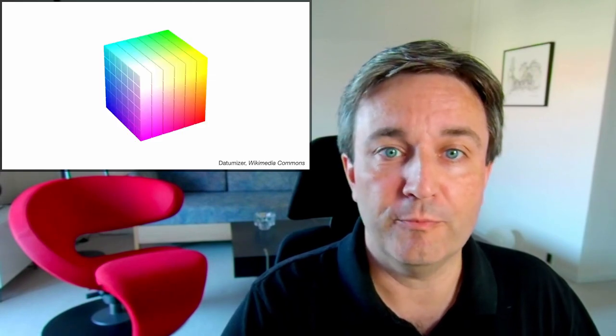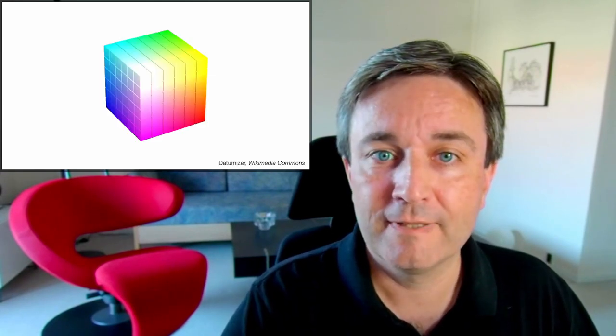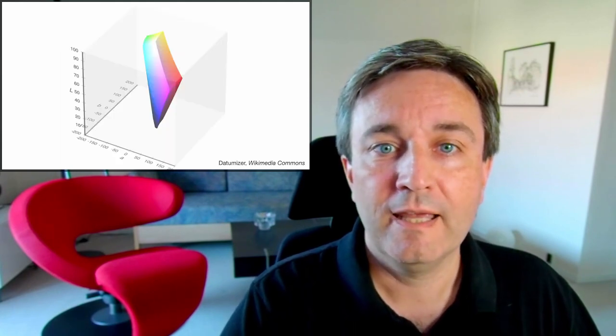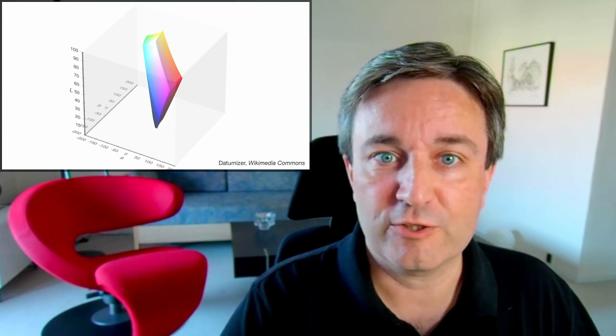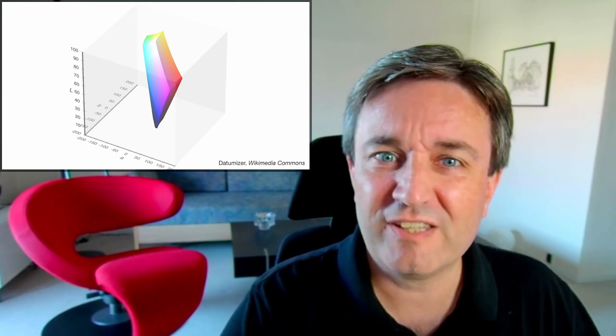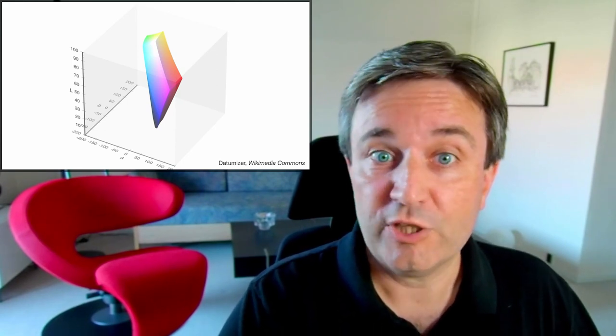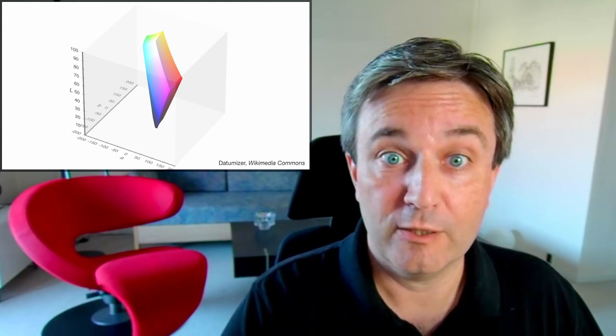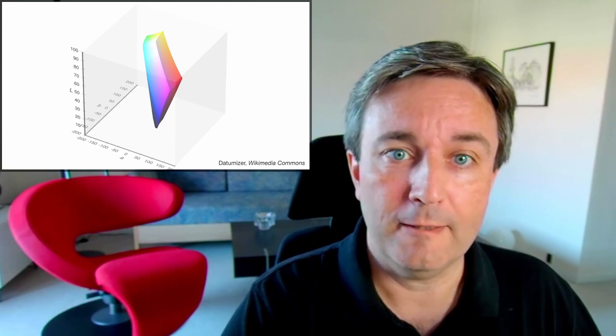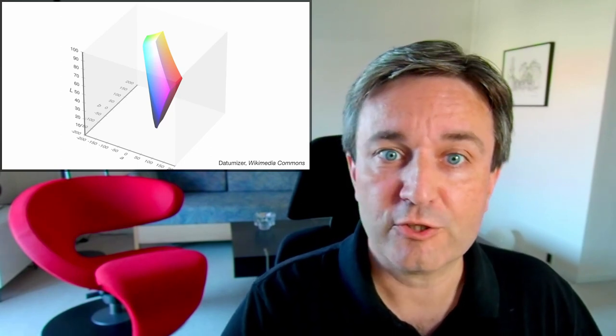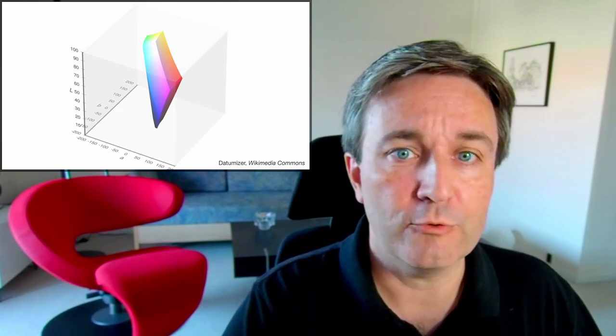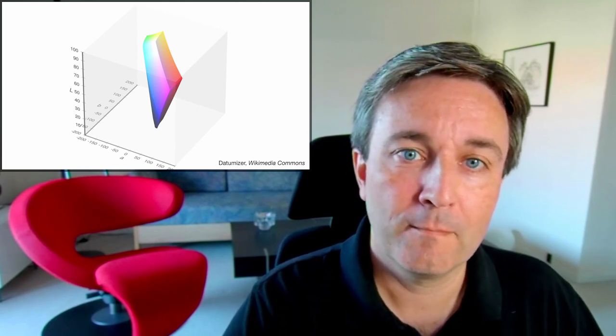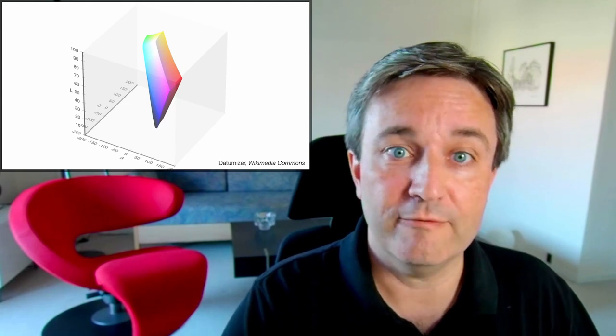If we take the RGB cube from before, looking like this, and we map it into L star, A star, B star coordinates, it gets bent all out of shape and looks like this. But this makes sense. You see white being the lightest color. But yellow is almost as light. And green and cyan are quite light as well. Black is the darkest. But blue is pretty close. And red and magenta are somewhere in between. This is how we actually perceive lightness.